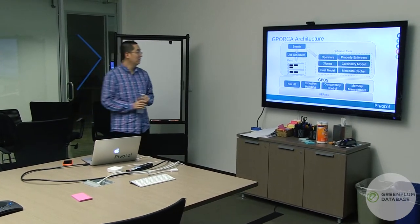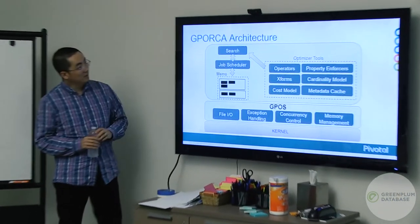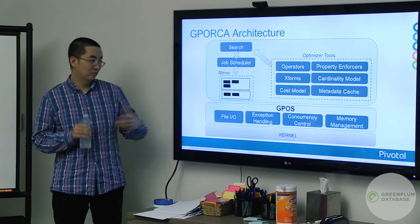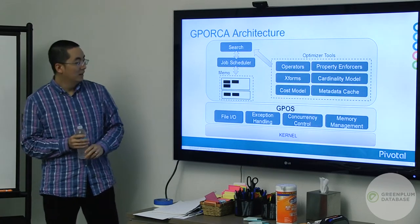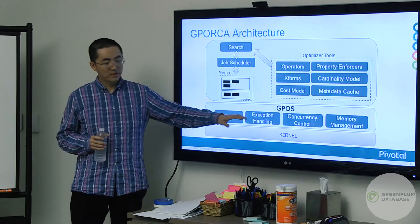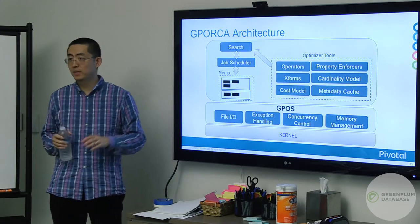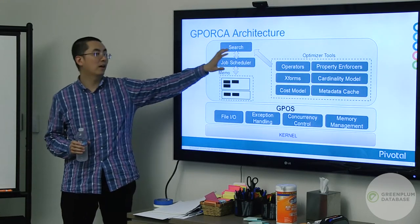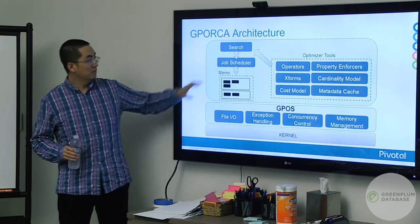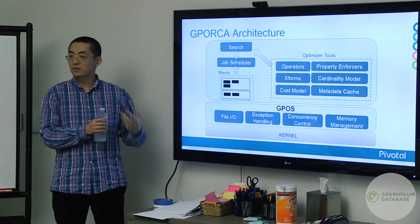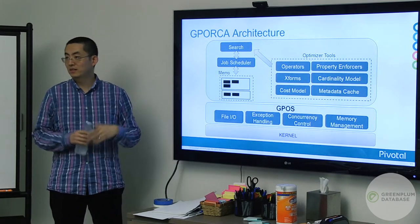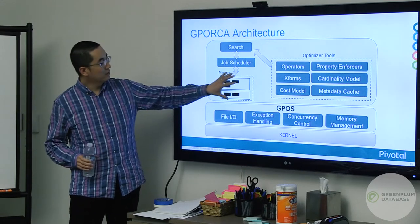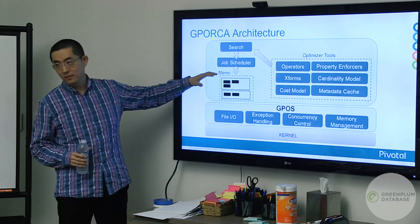Looking deeper inside GP-ORCA, it's roughly split into two pieces. There is a layer called GPOS — GreenPlum Operating System — which handles all file I/O, exception handling, concurrency controls, and memory management. Building on top of that is a job scheduling-based optimizer: everything is a job, the optimizer schedules jobs, and when all jobs are finished, we say we've finished optimization and we produce the best plan. All context information about different query plans is stored in the memo data structure.